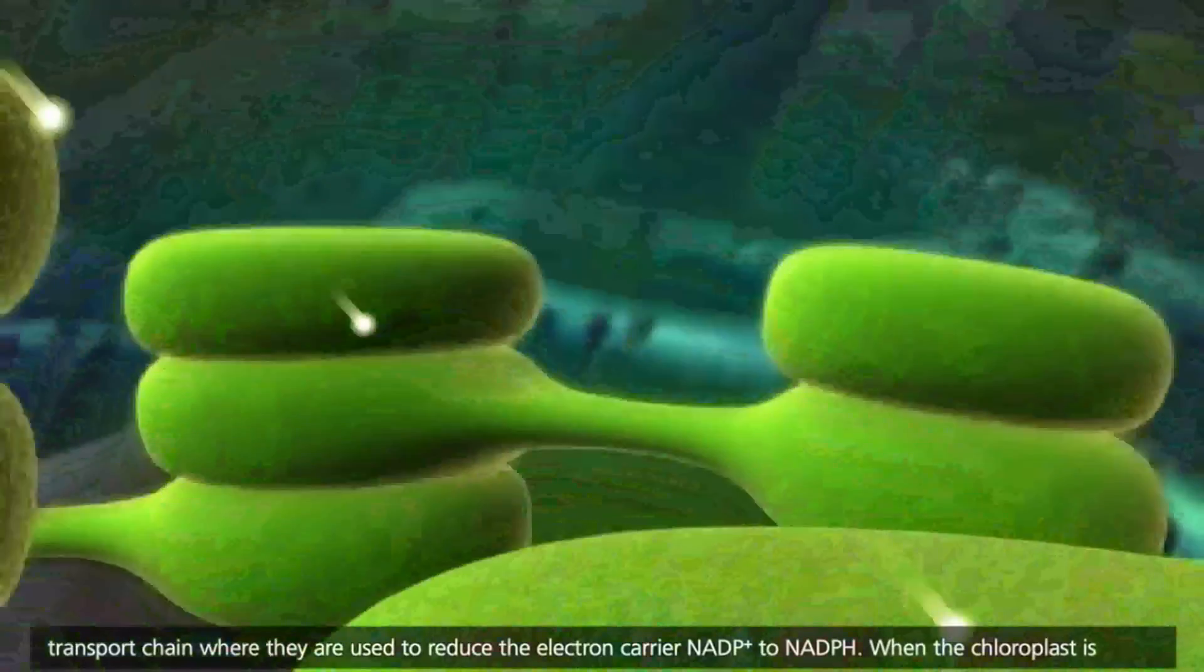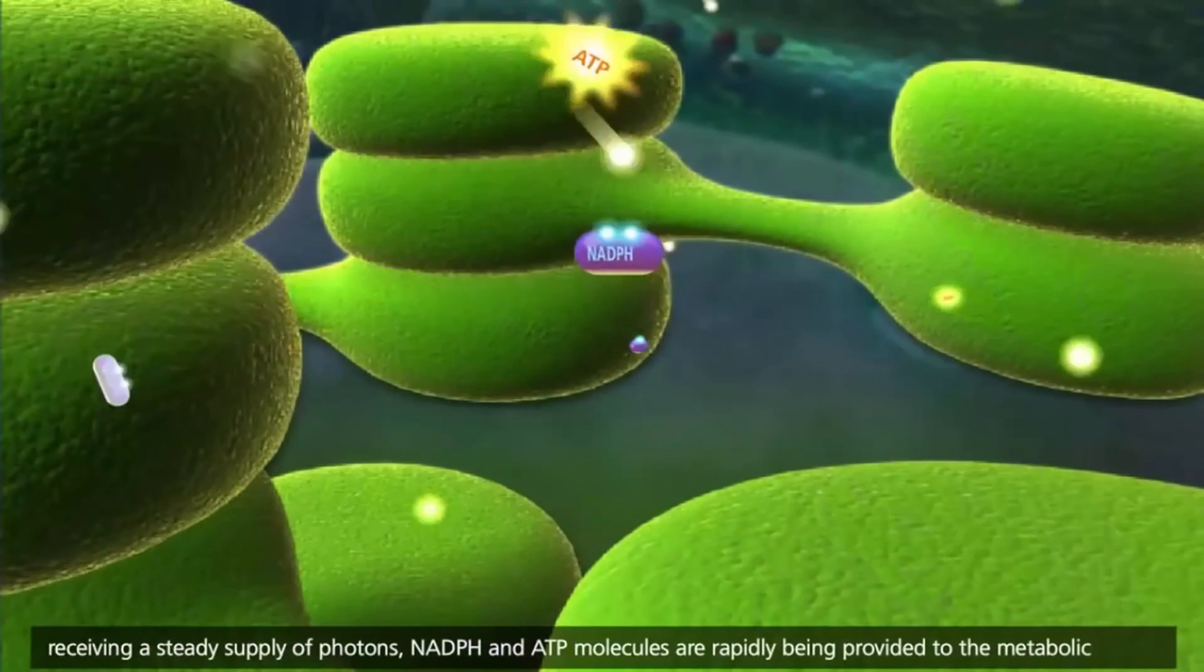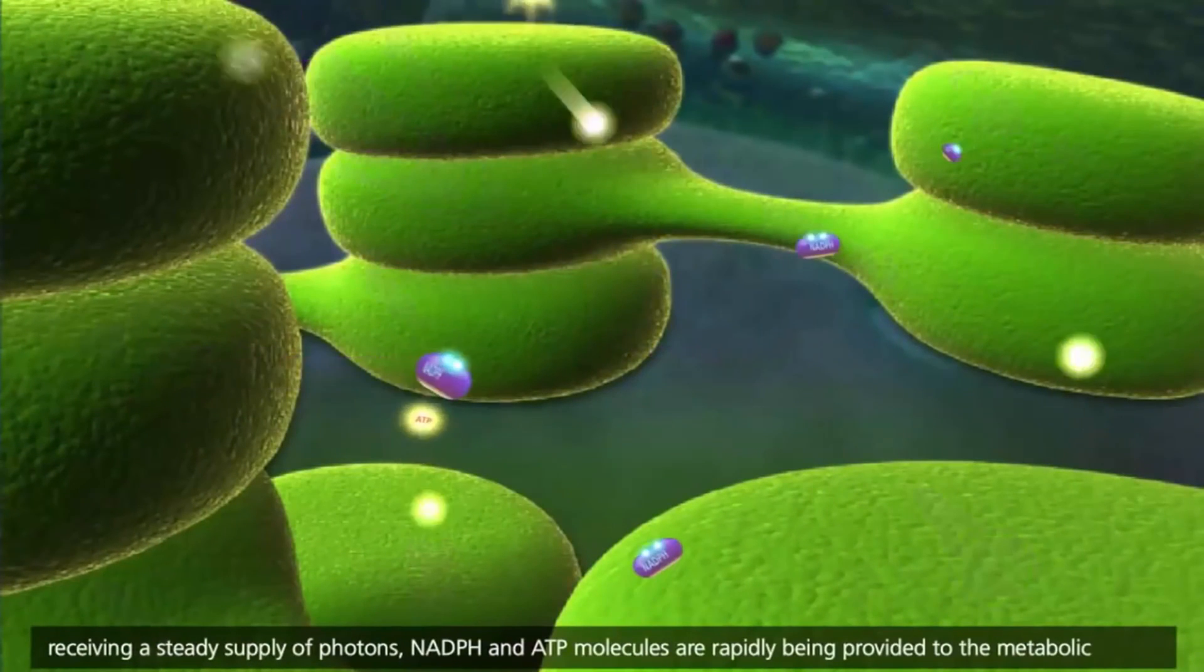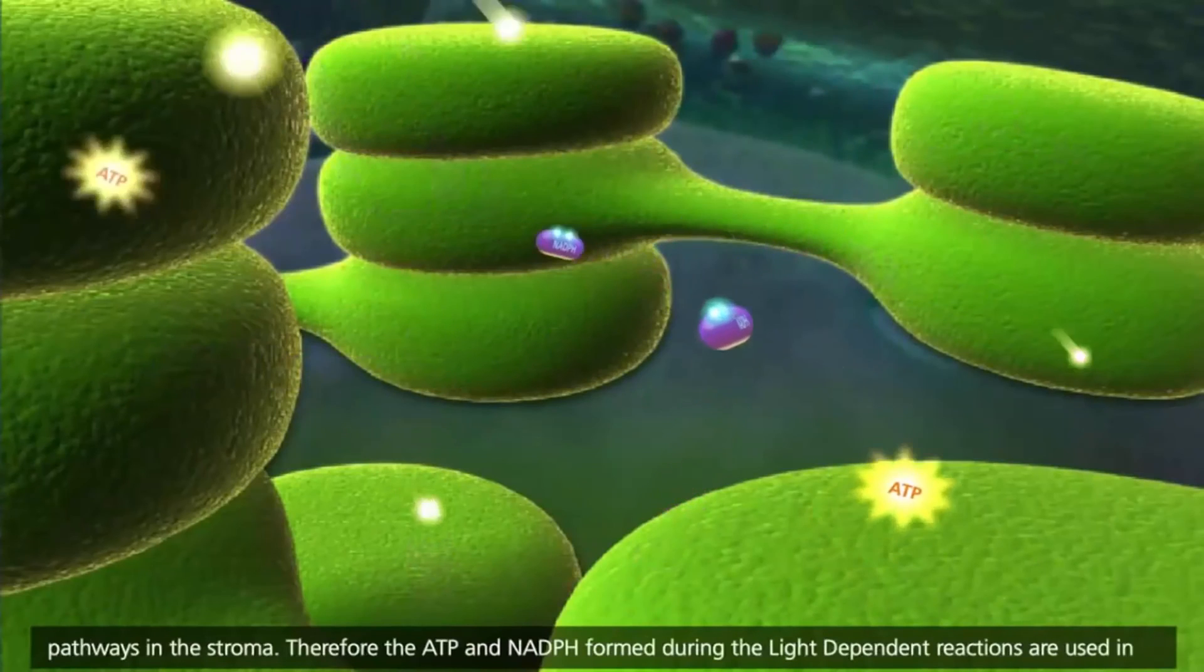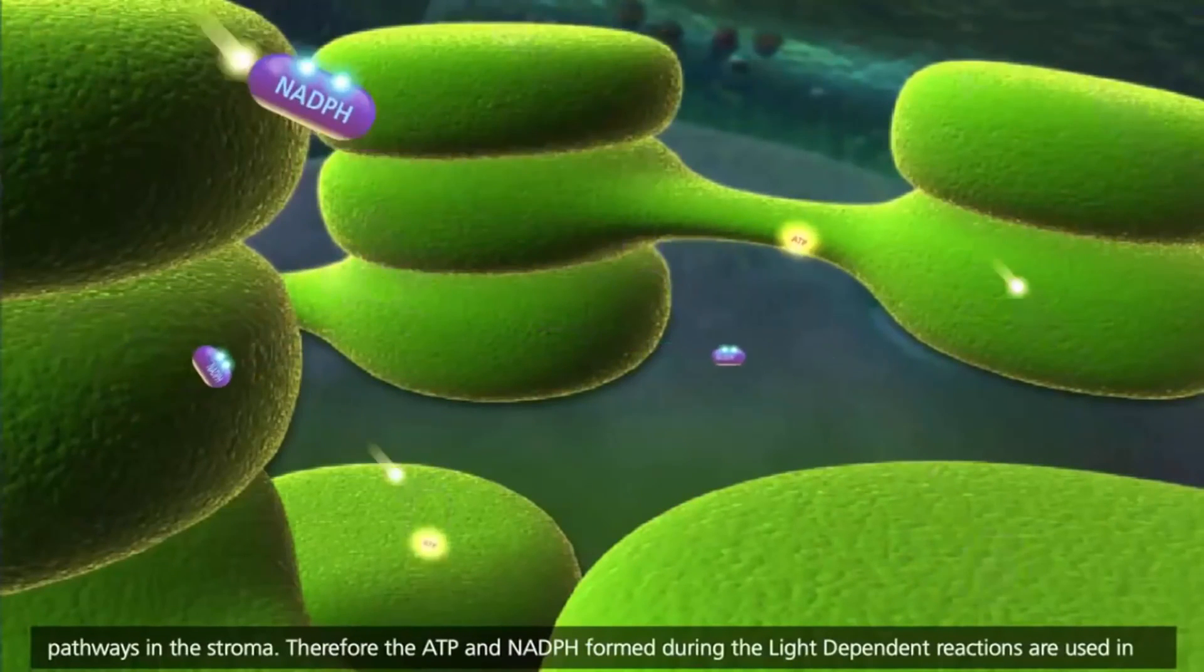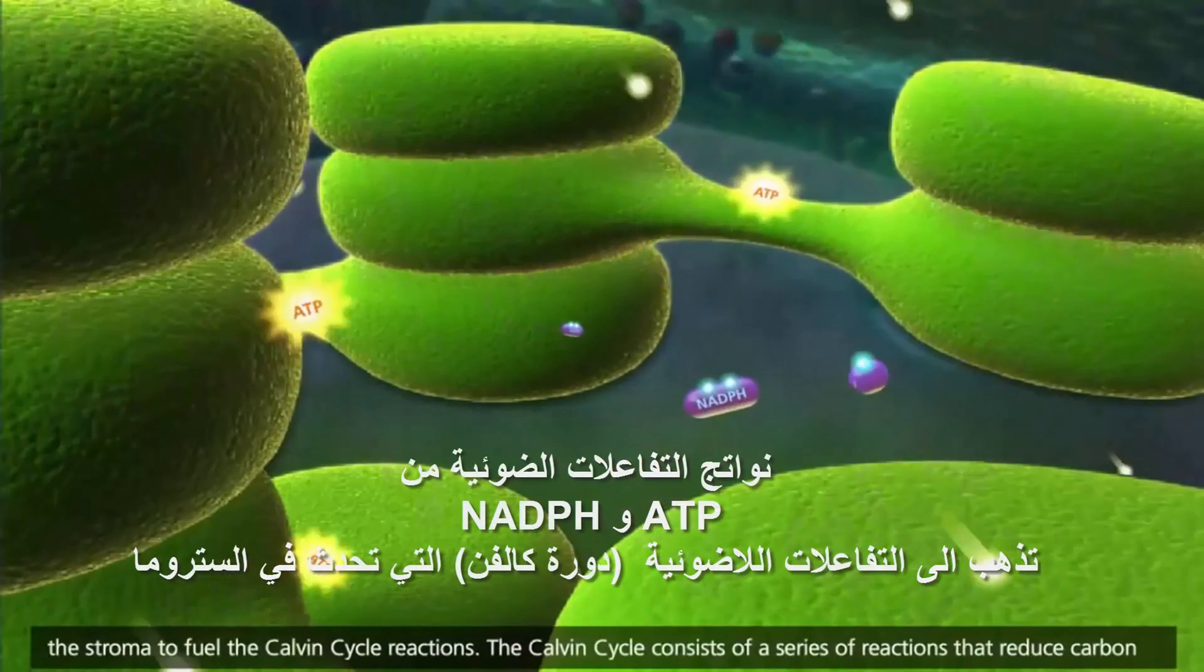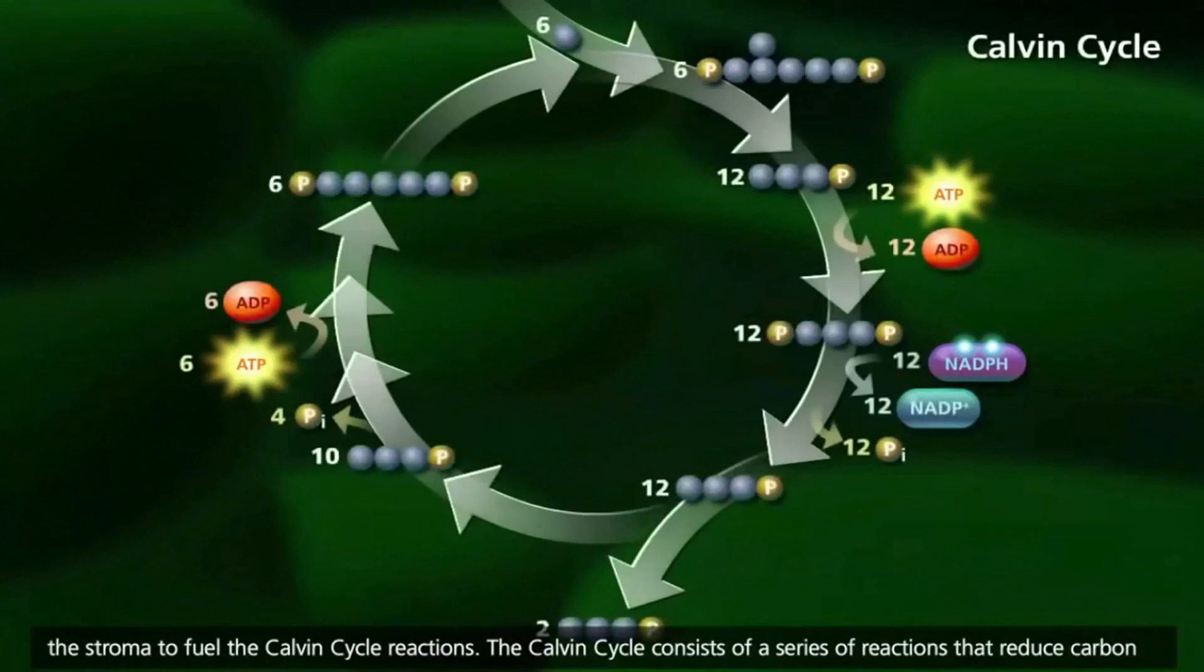When the chloroplast is receiving a steady supply of photons, NADPH and ATP molecules are rapidly being provided to the metabolic pathways in the stroma. Therefore, the ATP and NADPH formed during the light-dependent reactions are used in the stroma to fuel the Calvin cycle reactions.